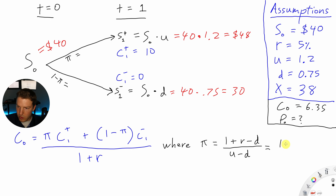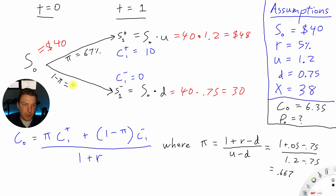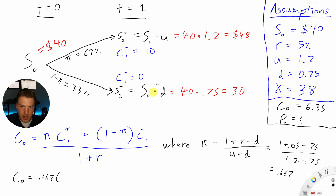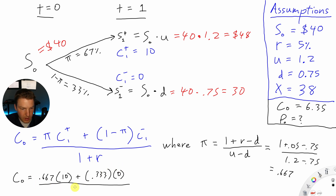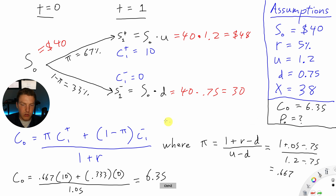The probability of the up move is: (1 plus the risk-free rate minus the down factor) divided by (up factor minus down factor) = (1.05 minus 0.75) divided by (1.2 minus 0.75), giving 0.667. Plugging in: 0.667 times $10 plus 0.333 times $0, divided by 1.05, equals $6.35 — matching our earlier answer.